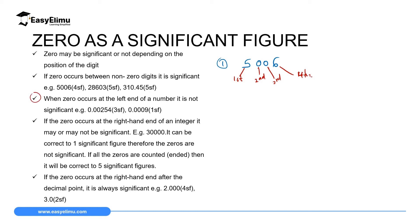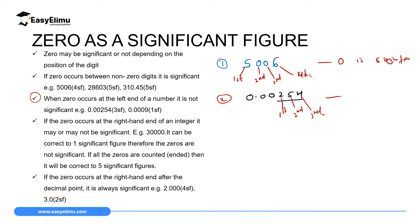Case 2 is when zero occurs at the left end of a number — in this case, zero is not significant. For example, the number 0.00254. The only digits which range between 1 and 9 are 2, 5, and 4. All the zeros on the left are not significant. So counting the significant figures: 2 is the first significant, 5 is the second, and 4 is the third — giving us three significant figures.